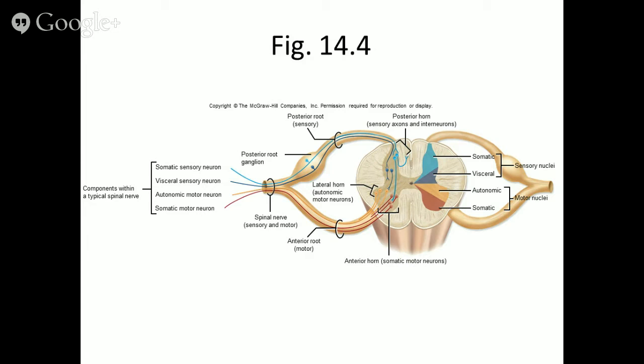A motor command is sent through the somatic motor neurons, through the anterior root or ventral root, out through the spinal nerve, and goes right back in the same direction where the stimulus came from. Because I stepped on a thumbtack with my right foot, that motor command travels down nerves into my right leg, which causes my leg to jerk back away from the thumbtack. We call that a reflex — an automatic, involuntary motor response to a stimulus. It's an involuntary response using voluntary effectors.